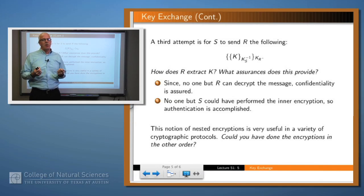We've seen this once before. We can apply two levels of encryption. We first of all apply the sender's private key. And then, to the result of that, we apply the receiver's public key. Now, what does this gain for us?